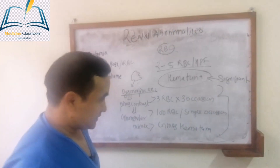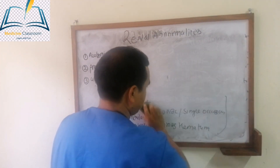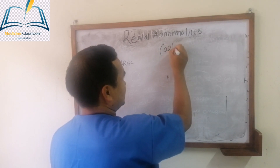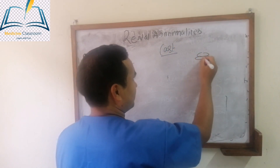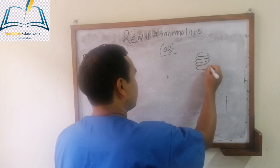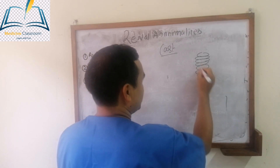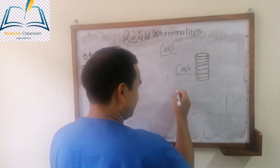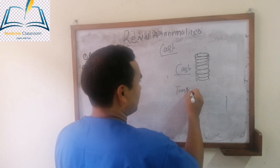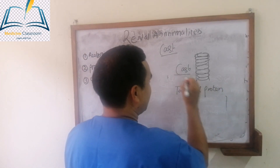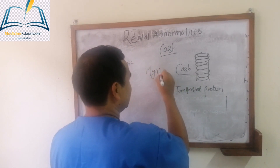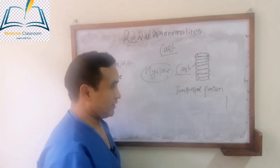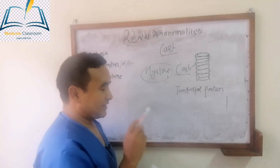Now we go to casts. A cast is simply a piling up of proteins giving a solid structure. Normally, casts are made up of Tamm-Horsfall protein, which is secreted by the tubules — the normal cast you see in urine is called the hyaline cast, made of Tamm-Horsfall protein.